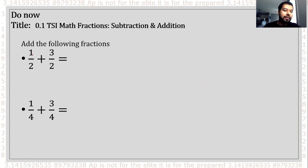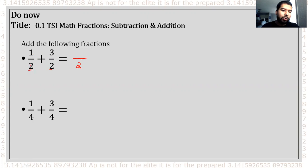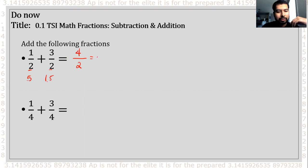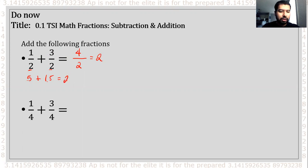We have the first fraction: 1 over 2 plus 3 halves, and they have the same denominator, so the denominator stays as 2. On the numerator, I have 1 half plus 3 halves. For some students it's easier to convert to decimals — 0.5 and 1.5. Otherwise, 1 plus 3 is 4, and 4 over 2 simplifies to 2. Either way — 0.5 plus 1.5, like 50 cents plus $1.50, gives you $2.